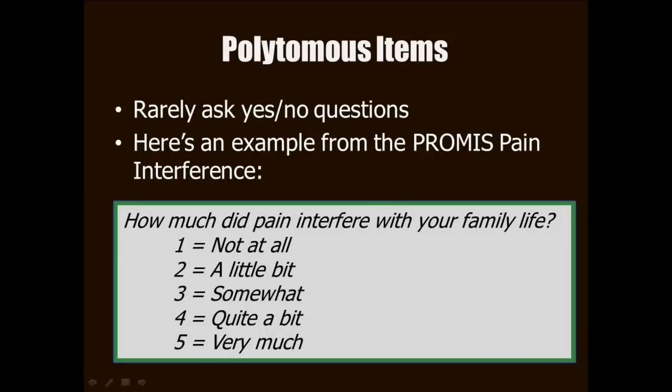So that was easy, but what about other types of items? When we measure patient reported outcomes, we seldom ask yes or no questions. More often the items are what's called polytomous, and that just means that there's more than two possible responses. So here's an example of a pain interference item from NIH's Patient Reported Outcome Measurement Information System, or better known as PROMIS. The item is: how much did pain interfere with your family life? And you notice that there are five possible responses, not just two.